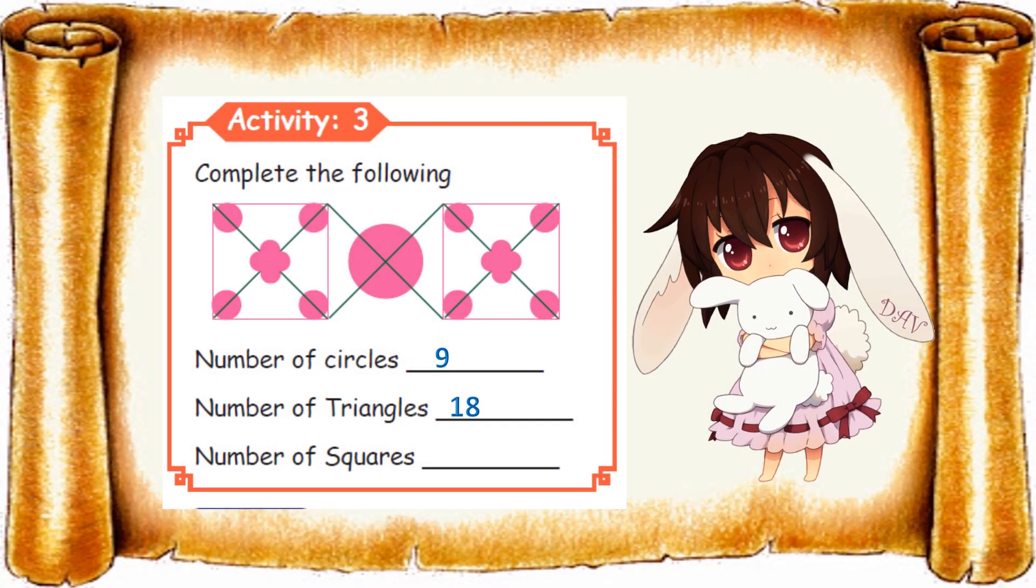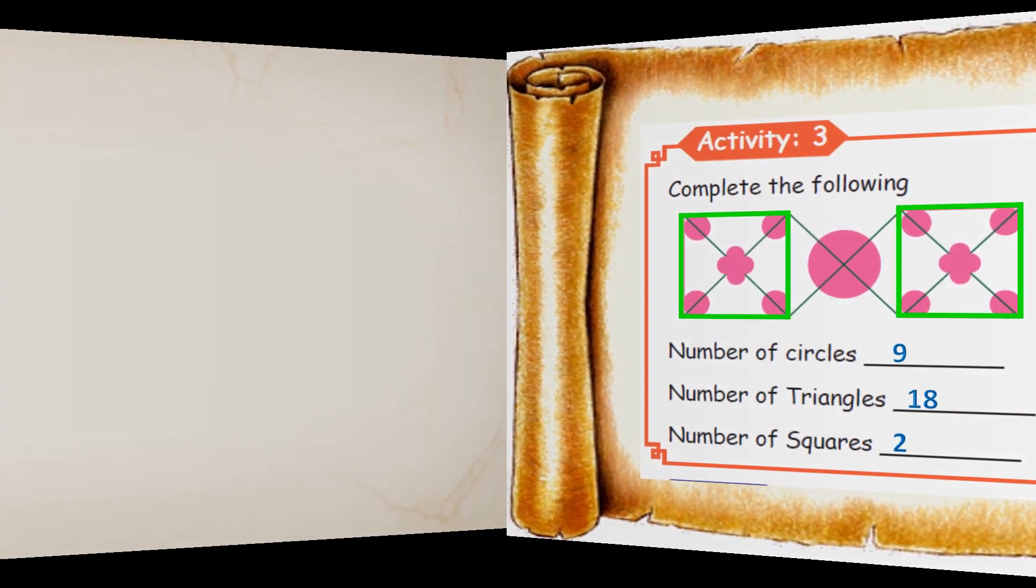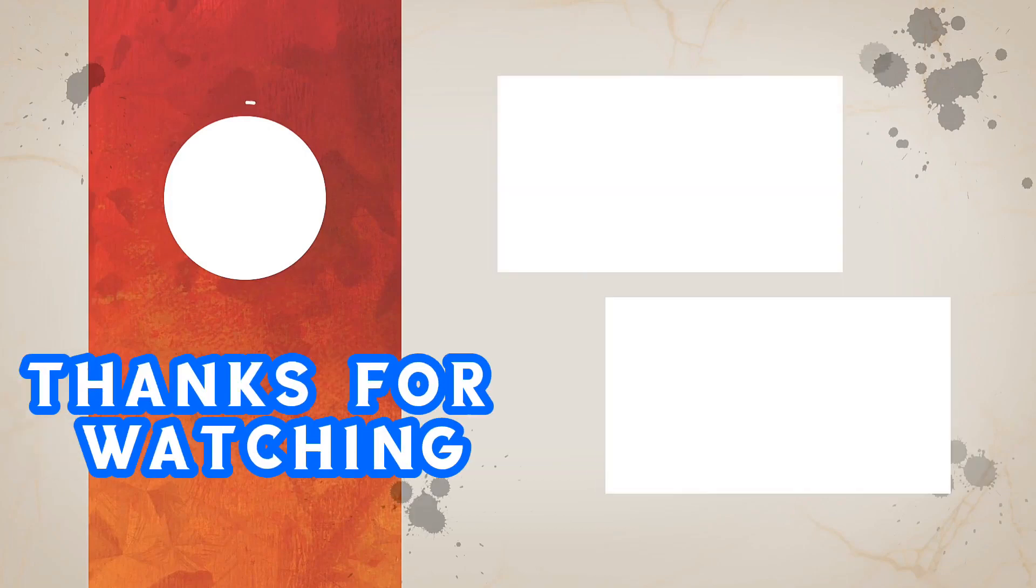Now number of squares. This is 1 and right side 2. That's it. So 2 is the answer here.